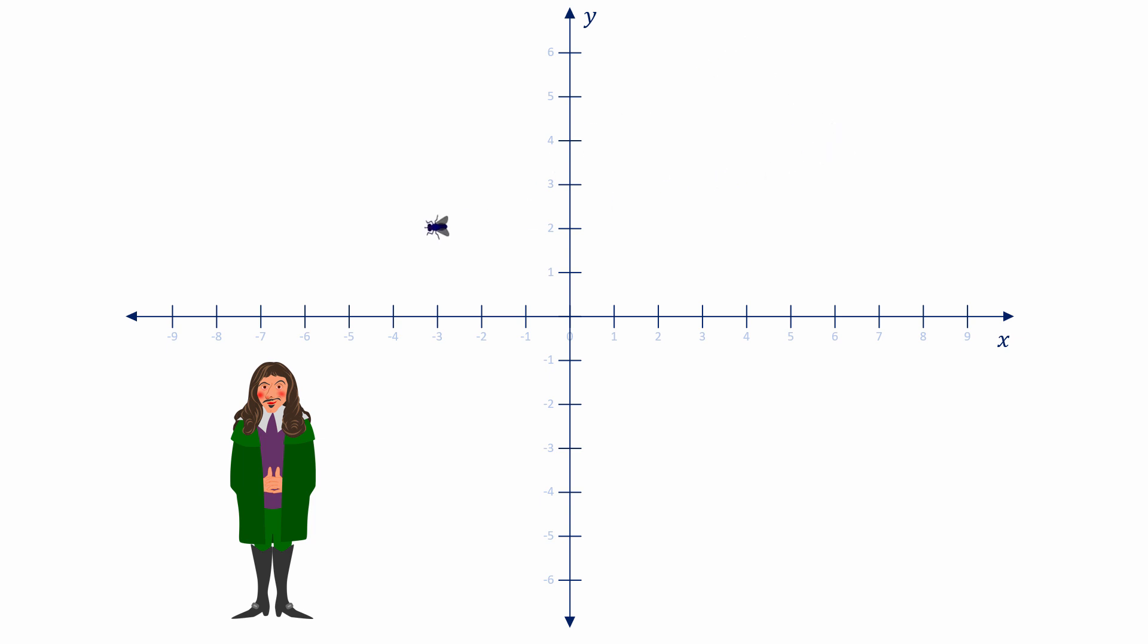According to legend, he was trying to describe the location of a fly on his ceiling. This system uniquely describes the position of a point in two-dimensional space, using a pair of real numbers as coordinates. So a simple shape, like a square, can be described with four pairs of coordinates. And by applying simple operations like addition and multiplication to each corner, it's possible to transform the shape.